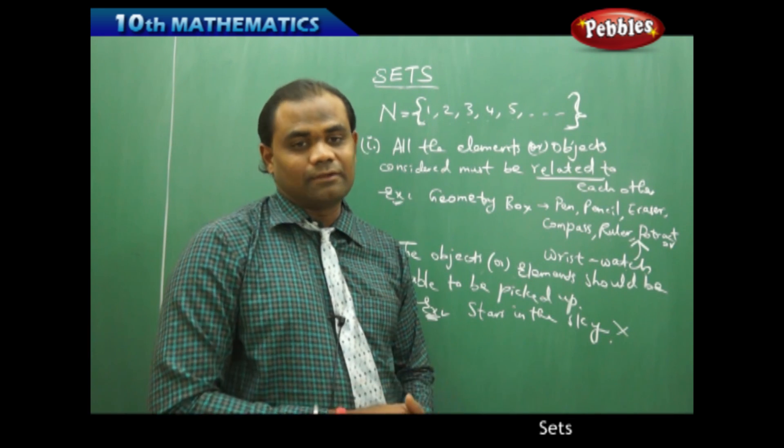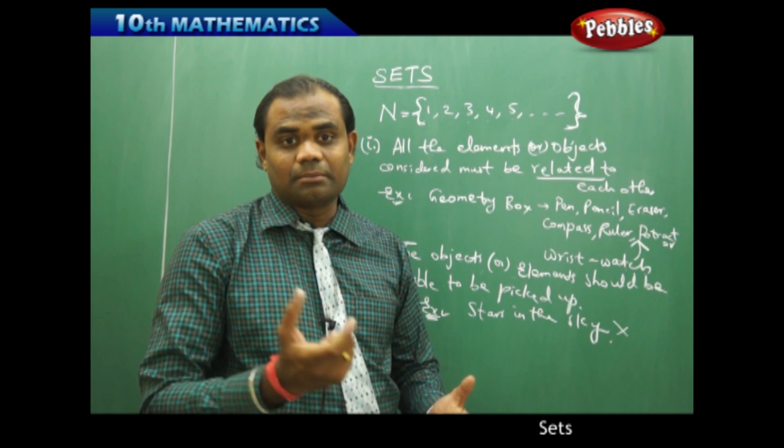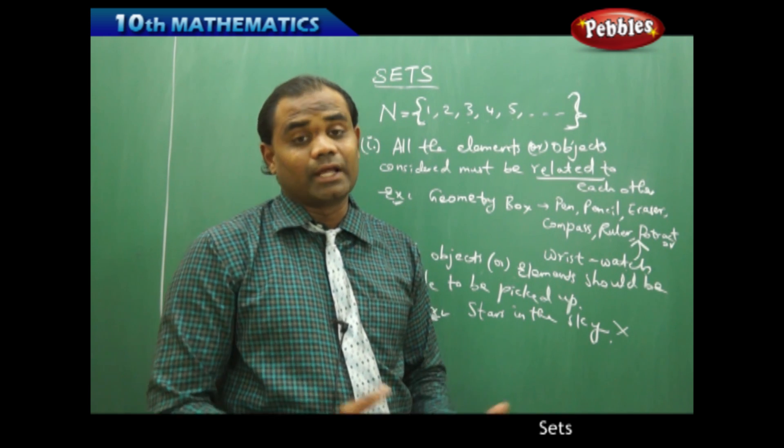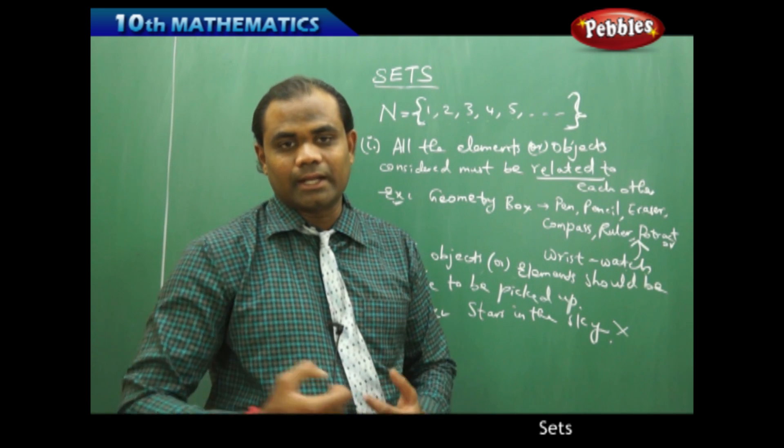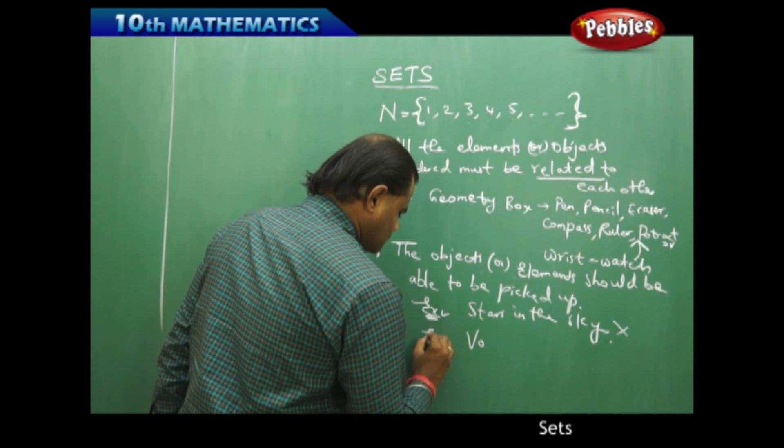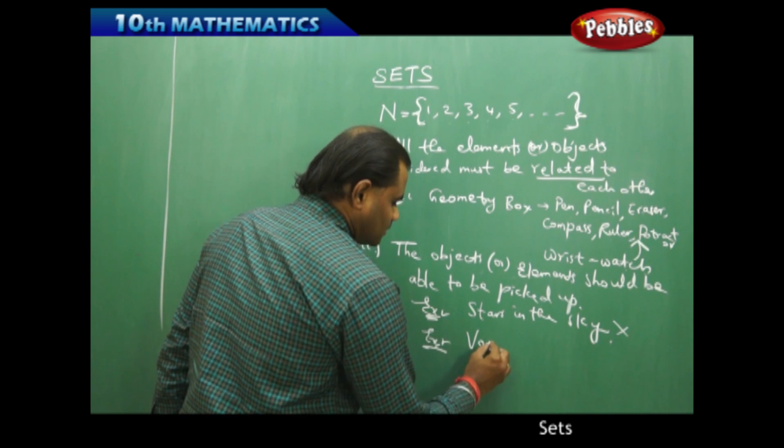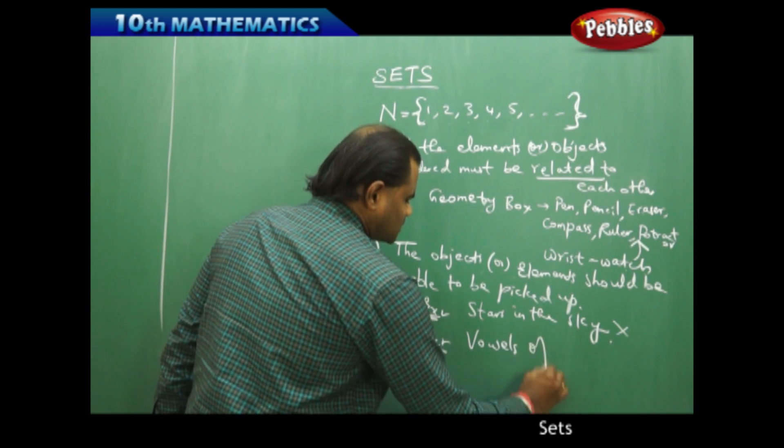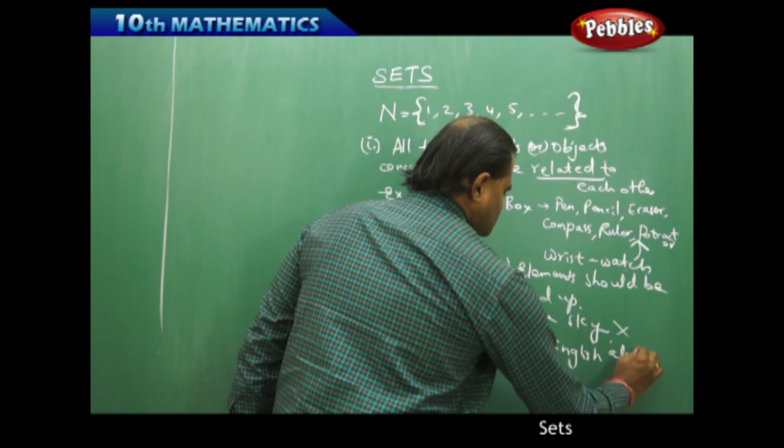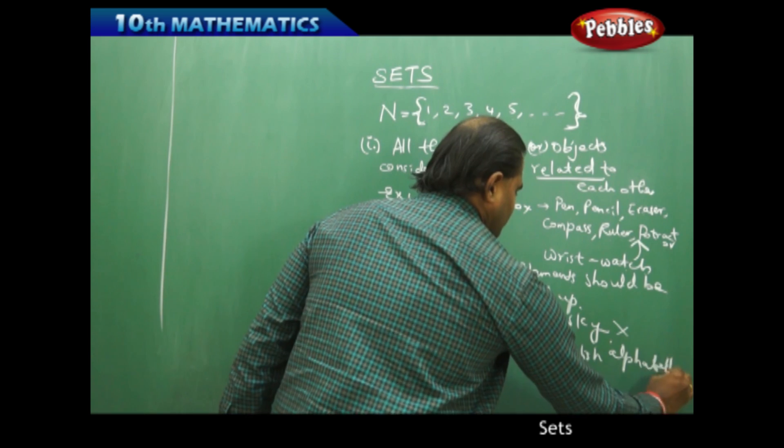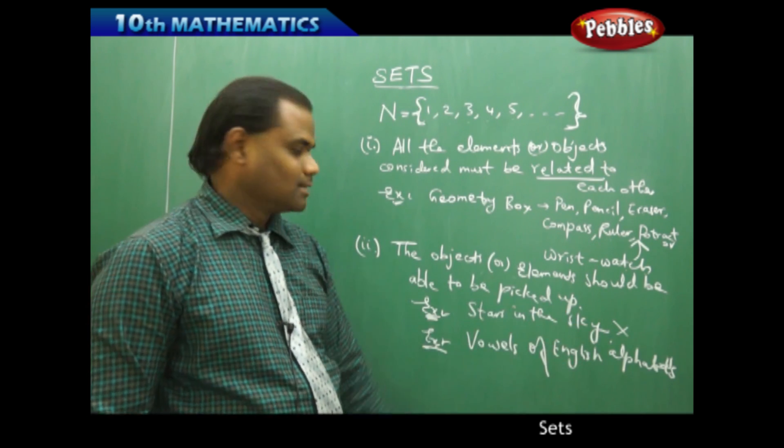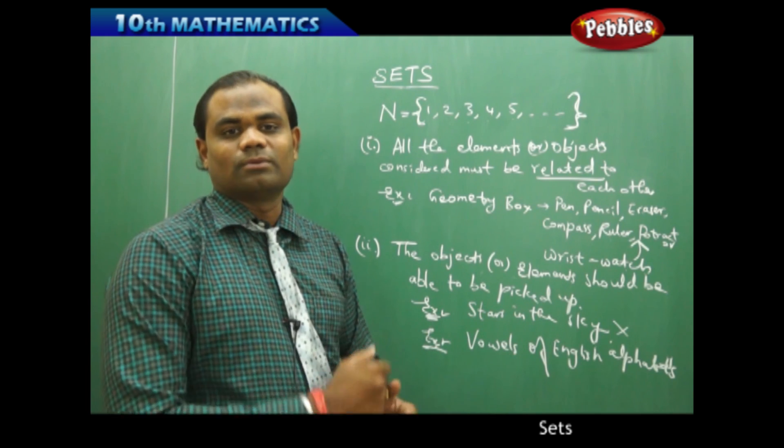But when I pick vowels from English alphabets, the vowels definitely can be picked from the 26 letters of the English alphabets, starting from A and ending with Z. But when I take the example of vowels of English alphabets, they can easily be picked. Therefore the vowels form a set. The stars in the sky do not form a set.